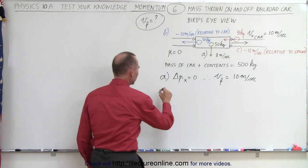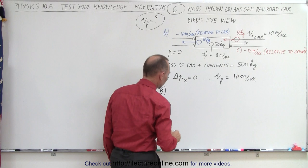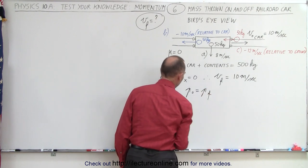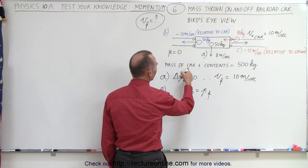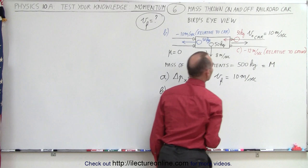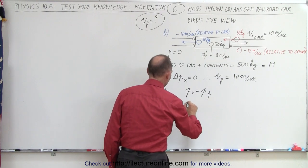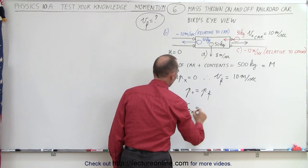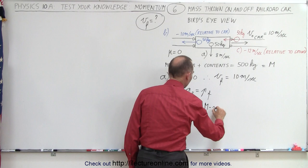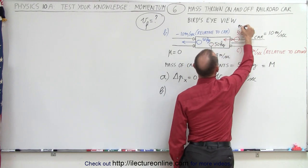For part B, we need to use the conservation of momentum equation because we are throwing something in the same direction as the movement of the car — at least in the x direction. So we can say P initial equals P final. The initial momentum is the car and its contents: 500 kilograms, call that big M, moving to the right at 10 meters per second. When the bag is thrown away from the car we'll have big M minus little m, where little m is the 50 kilogram bag.